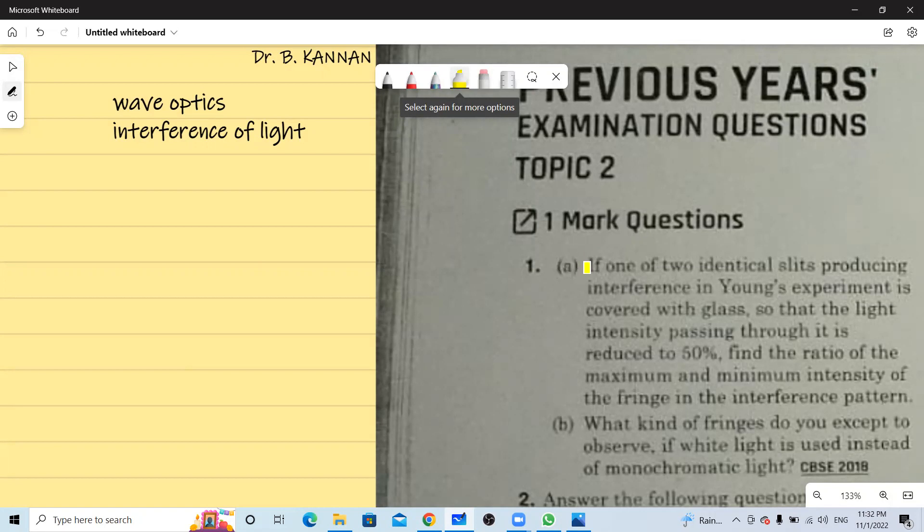So if one of the two identical slits producing interference pattern is covered with glass so that the light intensity passing through it is reduced to 50 percent, find the ratio of the maximum intensity and the minimum intensity of the fringes in the interference pattern.